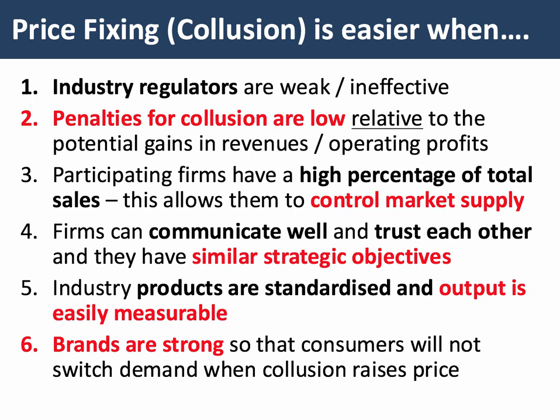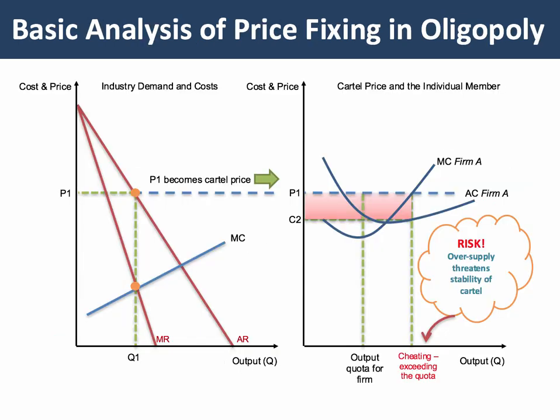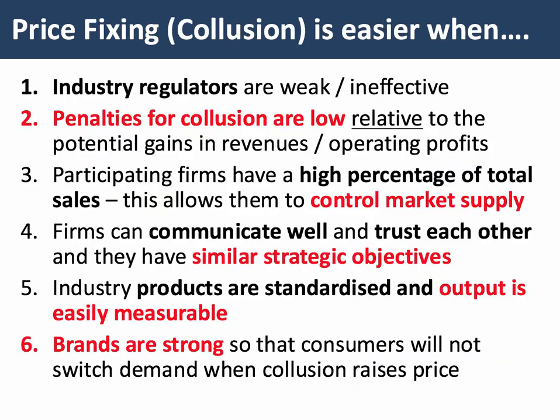Cartels are easier when the product is standardised and fairly homogenous — like oil or cement. Collusion is also easier when output is measurable, because if you go back to your cartel diagram, you've got to be able to measure output and see if there's any cheating going on. Finally, a cartel is probably easier when the brand is strong — when you have a series of very strong brands which consumers are loath to change their spending patterns on, making it easier for the cartel to raise the price.